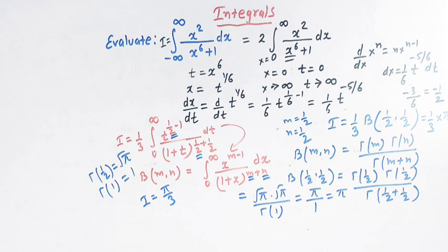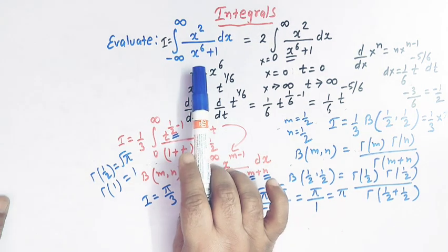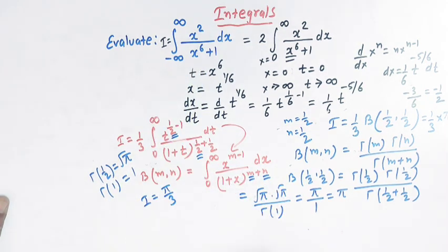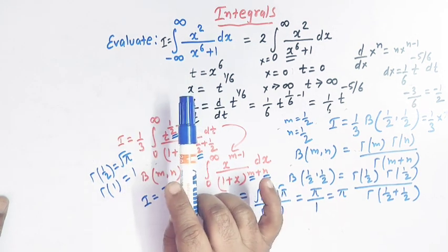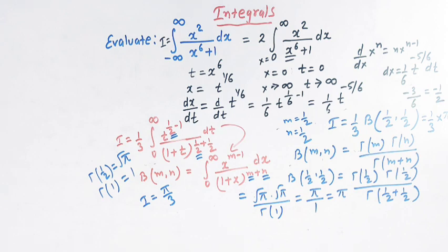This is how by making use of the concept of beta and gamma functions, we can solve these kinds of integrals easily. Moreover, we can also solve these integrals by the method of contour integration using the concept of residues and Cauchy's residue formula. We'll consider this topic very shortly.